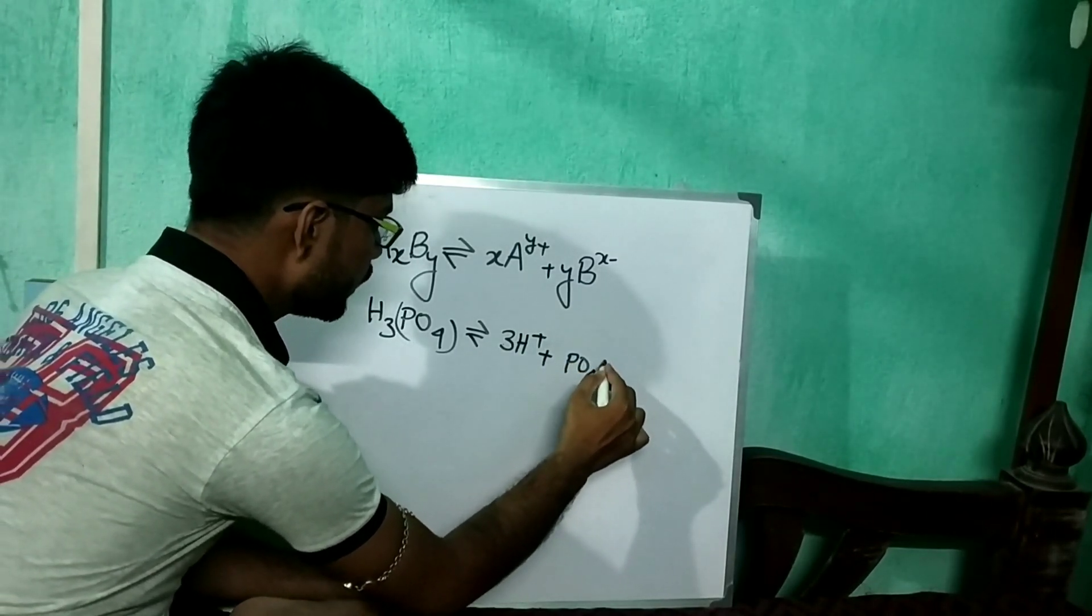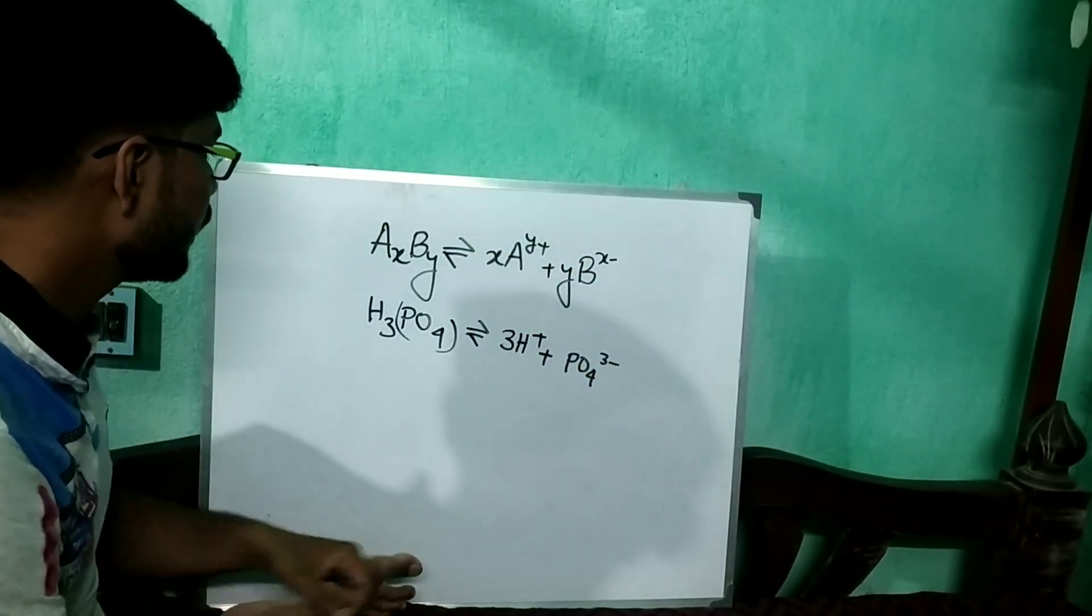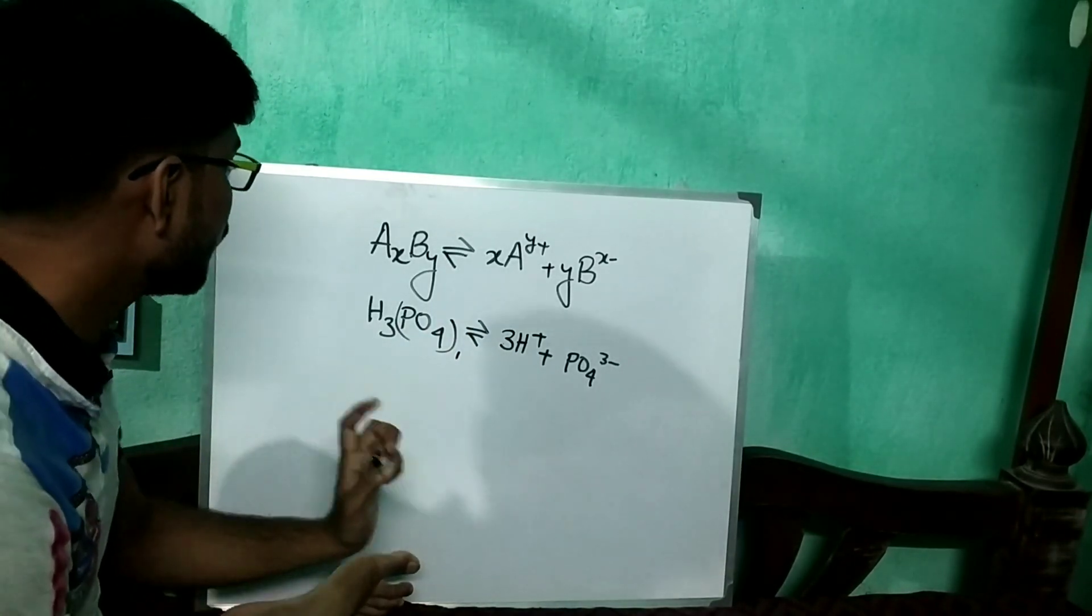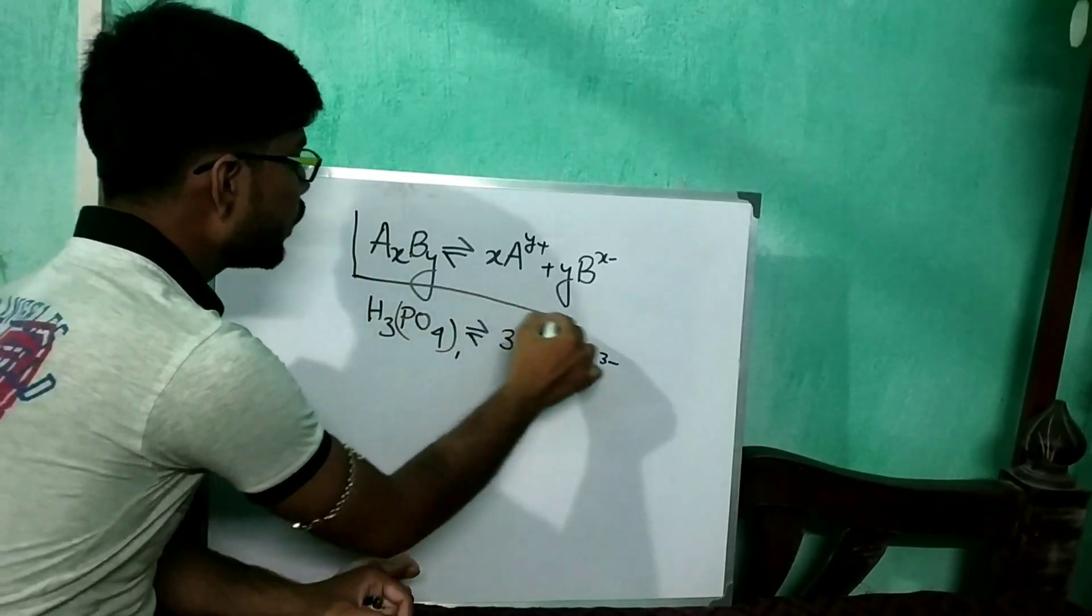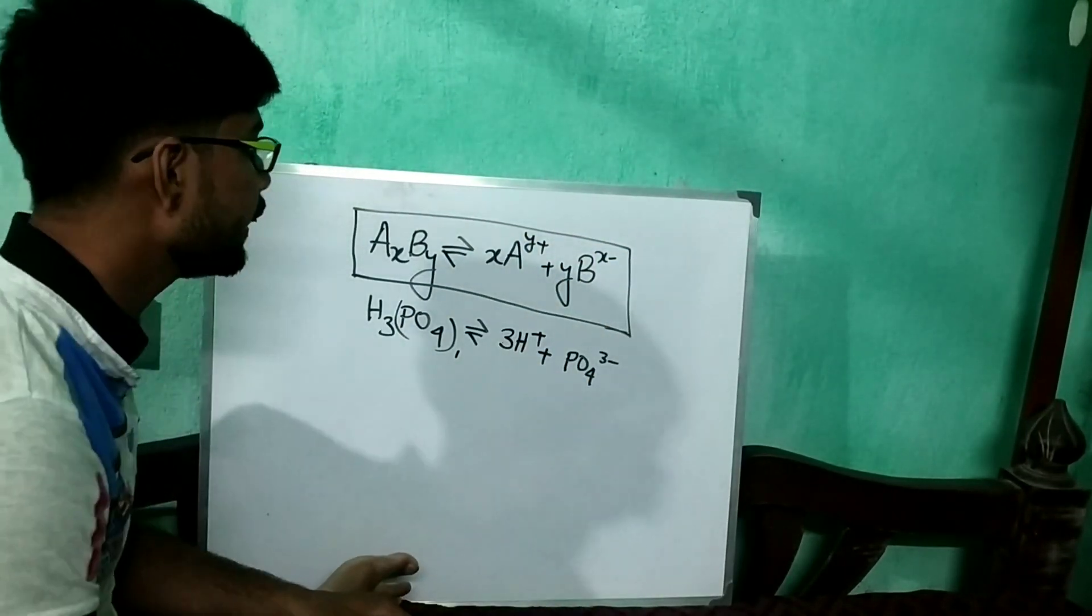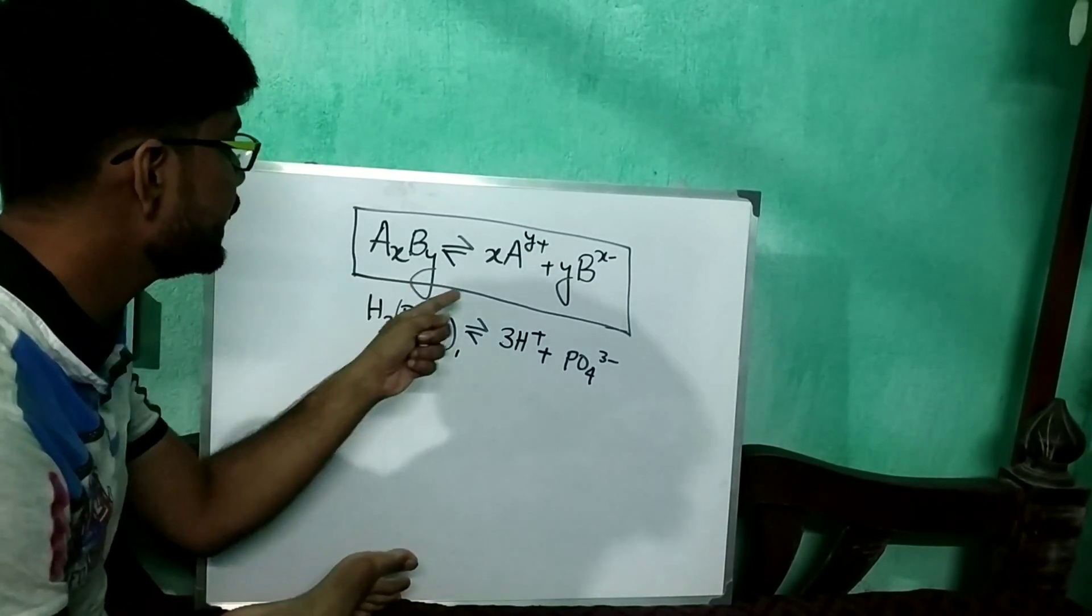Okay, so that is the process of ionization, and this is the main overall formula for the deposition of ion, I mean to say the ionization. How to ionize any compound using this formula? You can ionize any compound.